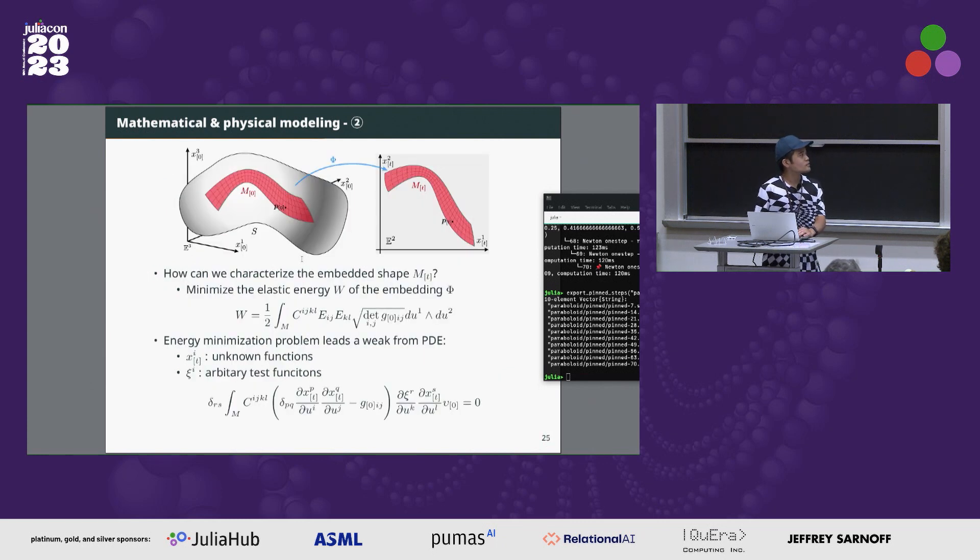So let's answer the first question: how can we characterize the embedded shape? We characterize the shape Mt by minimizing the elastic energy W of the embedding phi. This is the concept of elastic surface embedding. This energy minimization problem is formulated as the following nonlinear PDE.